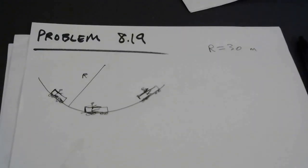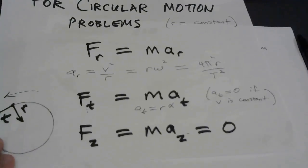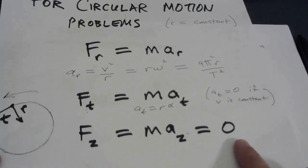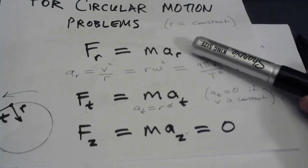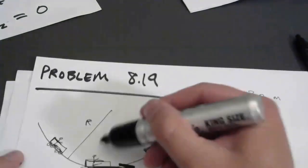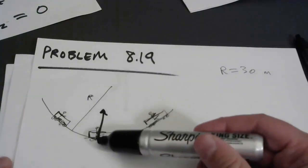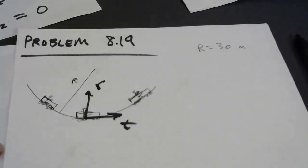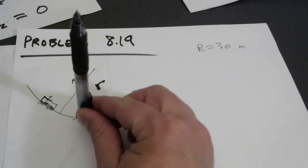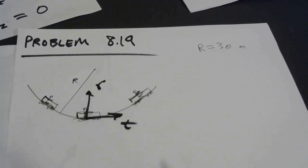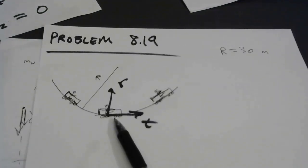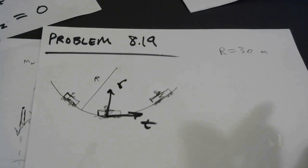For circular motion problems in this chapter, you use the three axes. The z-axis often has zero acceleration. In this roller coaster problem, the T-axis is tangent to the circle and the R-axis points towards the center. I'm not going to write the T-axis equation since there's no mention of friction. Let's go straight to the R-axis.